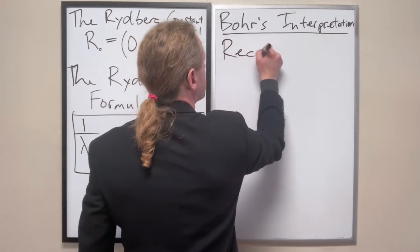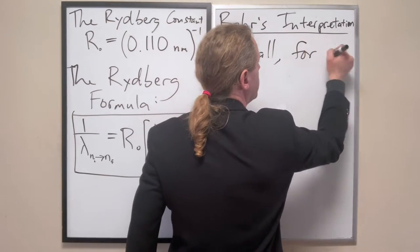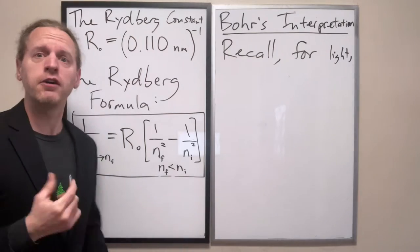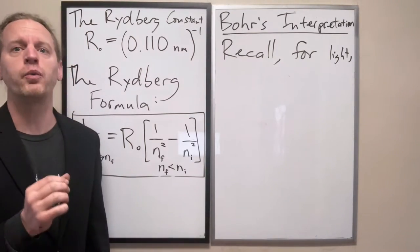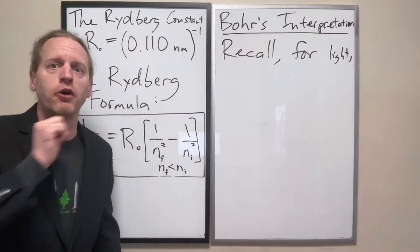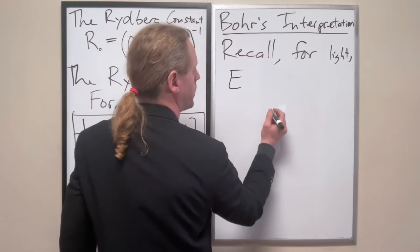So, recall, and this is based on the photoelectric effect, for light, we know that if you have a single photon of light, which at this point we can reasonably assume that that hydrogen lamp is spitting out photon after photon, we know that the energy of each photon